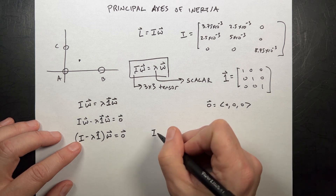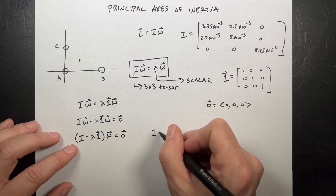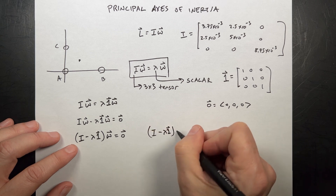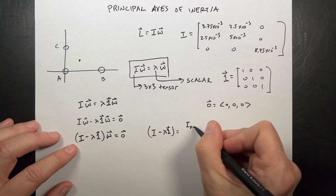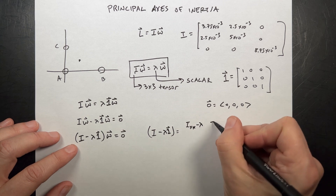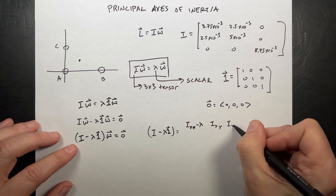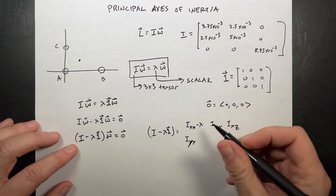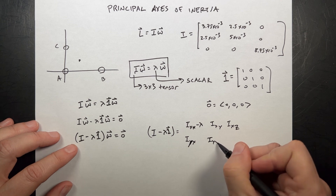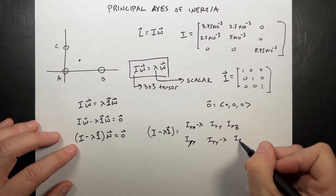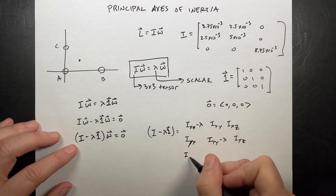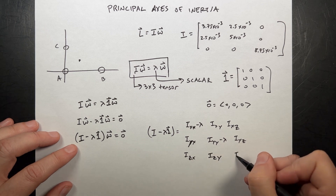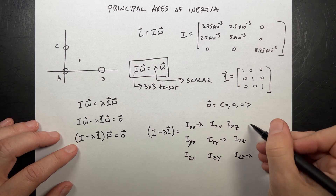So let's write out the determinant condition. I minus lambda·1 is the matrix: (I_xx − λ), I_xy, I_xz in the first row; I_yx, (I_yy − λ), I_yz in the second row; I_zx, I_zy, (I_zz − λ) in the third row. That's my matrix, and I want to take the determinant of that and set it equal to zero.